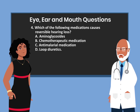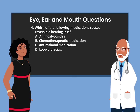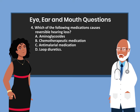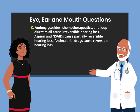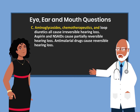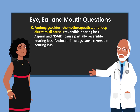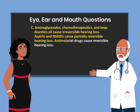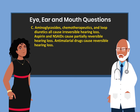Question 4. Which of the following medications causes reversible hearing loss? A. Aminoglycoside. B. Chemotherapeutic medication. C. Antimalarial medications. D. Loop diuretics. The answer is C. Antimalarial medications. Aminoglycoside, chemotherapeutics, and loop diuretics all cause irreversible hearing loss. Aspirin and NSAIDs cause partially reversible hearing loss. Antimalarial drugs cause reversible hearing loss.